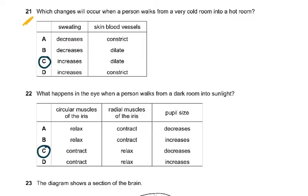Question 21: which changes will occur when a person walks from a very cold room into a hot room? From a very cold room into a hot room, sweating will increase and the blood vessels will dilate. Vasodilation. This is going to result in more sweating where the person has to lose more heat.